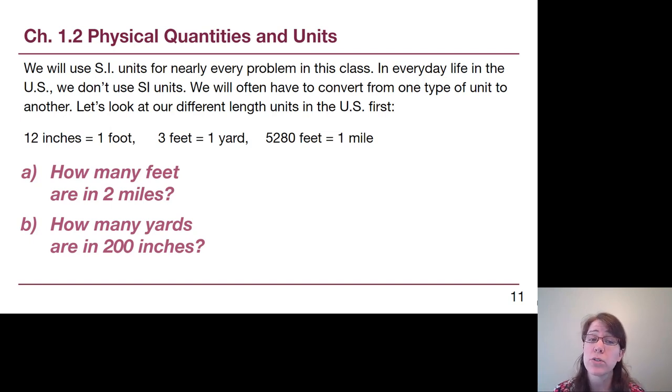We're going to use standard international units for every problem in this class when doing quantitative problem solving after chapter one, but in everyday life we don't use that system. We use imperial units. Even if we just think about length units in the U.S., we have inches and feet and yards and miles—they're kind of a mess, but we understand them because we use them all the time. Let's make sure we know in general how we can convert from one unit type to another. In this first video, we'll introduce what's called the train tracks method.